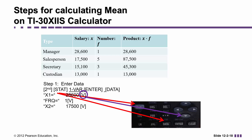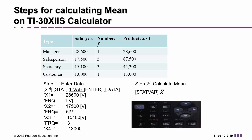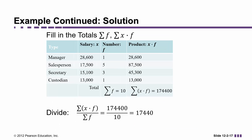Then the second data value, X2, would be 17,500 — arrow down. The frequency of that one is 5 — arrow down again. The third data value was 15,100 with a frequency of 3, and the fourth one is 13,000 with a frequency of 1. Once you've entered those, you don't have to push enter or anything. The second step is to calculate the mean: hit the stat var button, which is right below the arrows. You'll see symbols across the screen, and one of them is X-bar — it should already be underlined. If not, arrow left to underline it, then hit enter, and the average we calculated will show up. You should see 17,440 on your screen. If you don't, go back and check that you entered the numbers correctly.